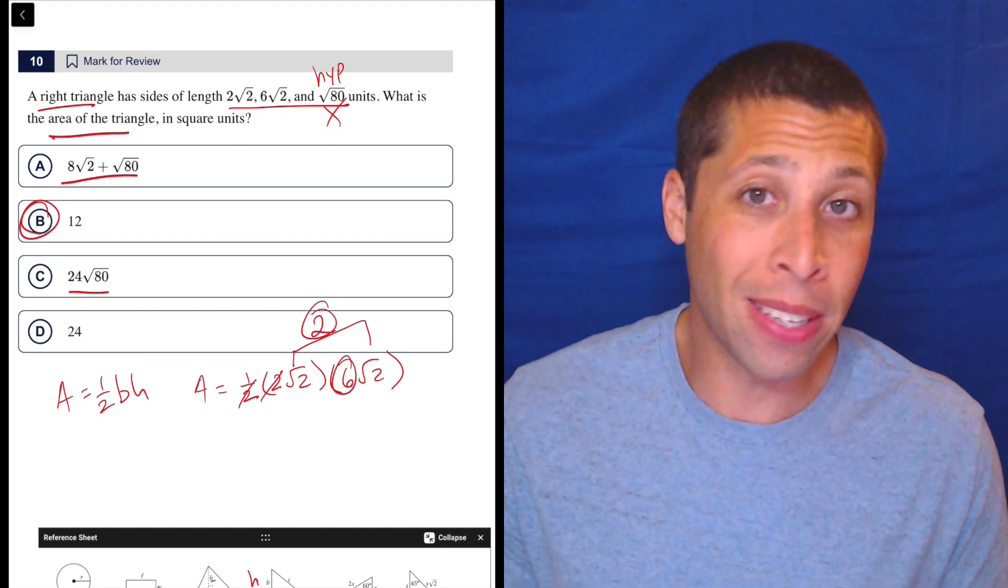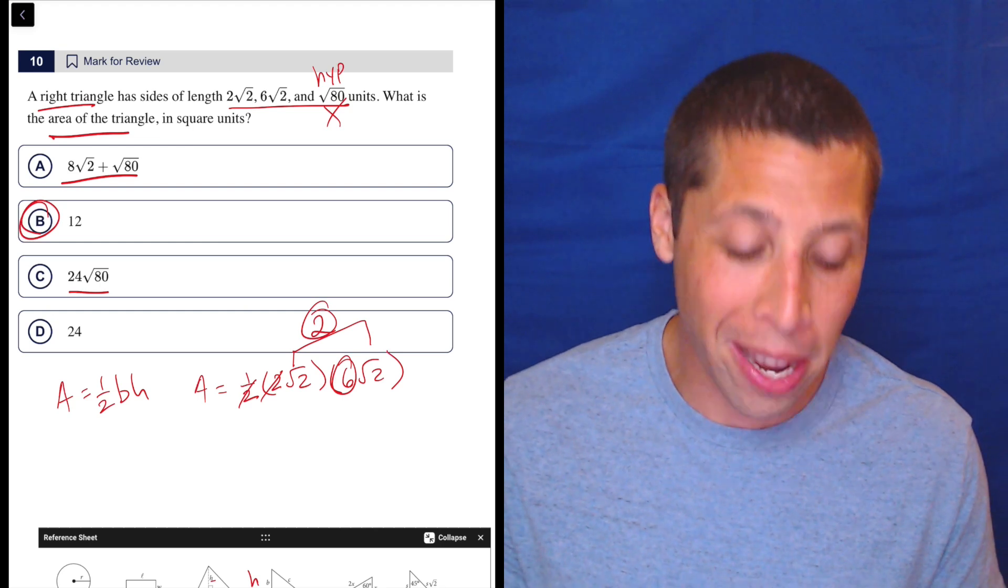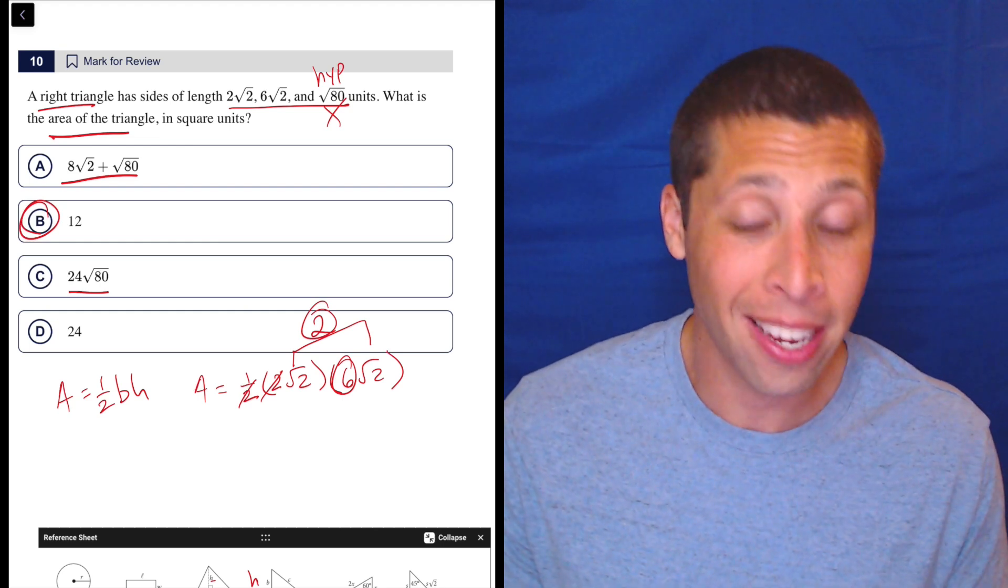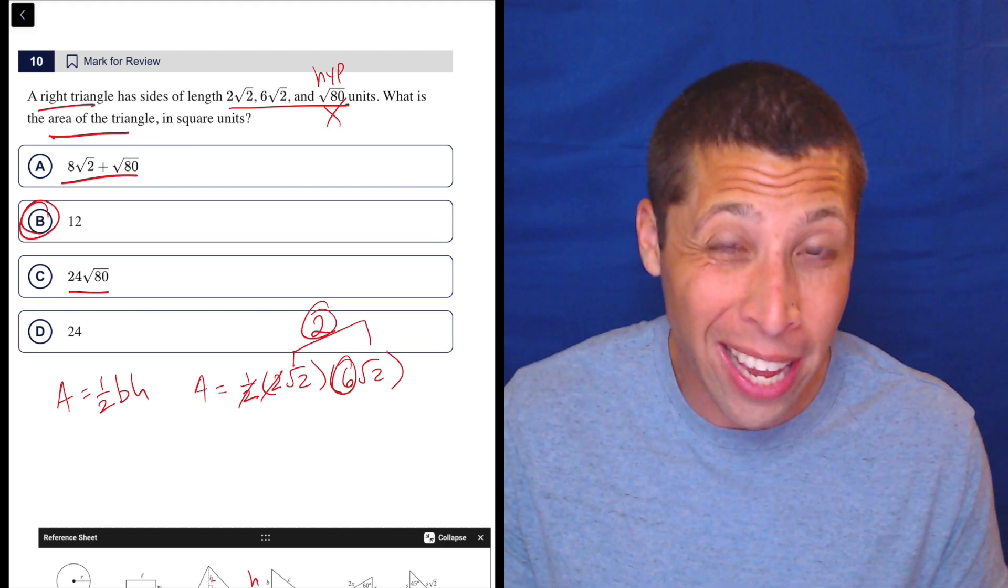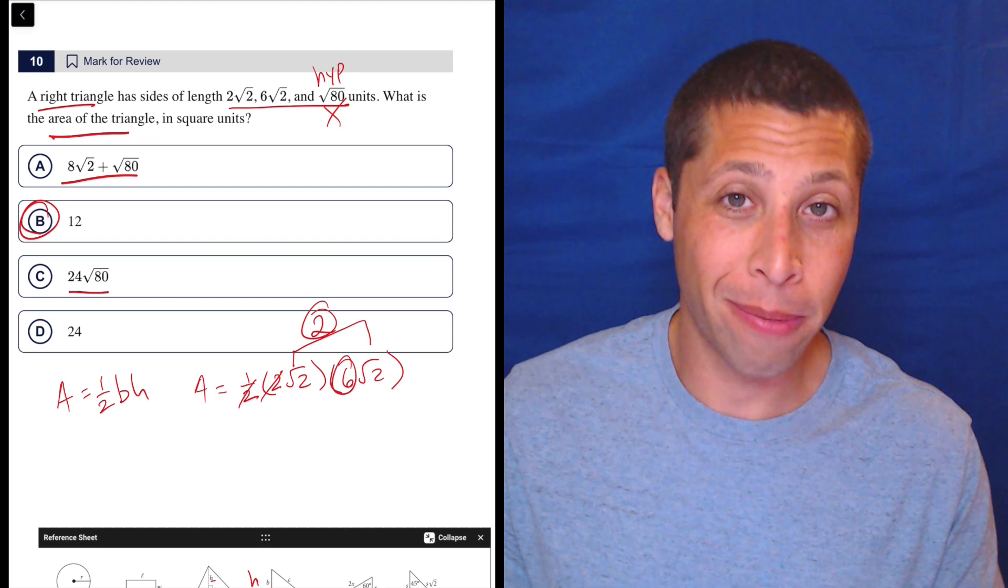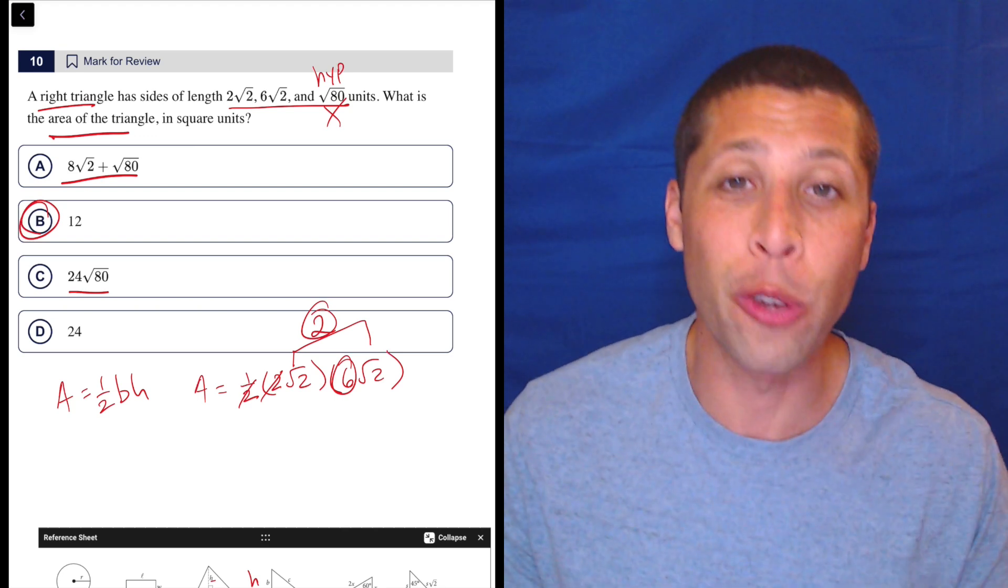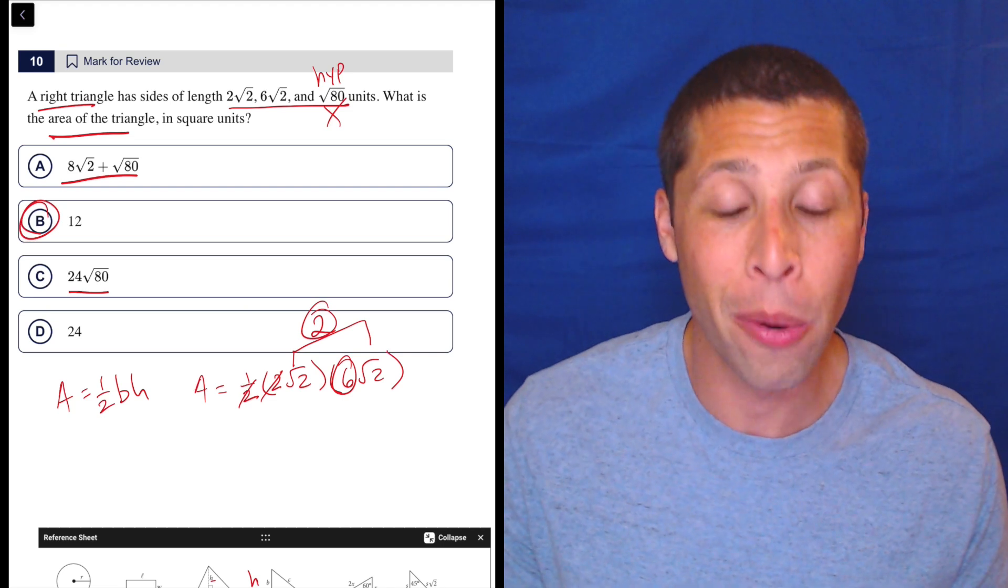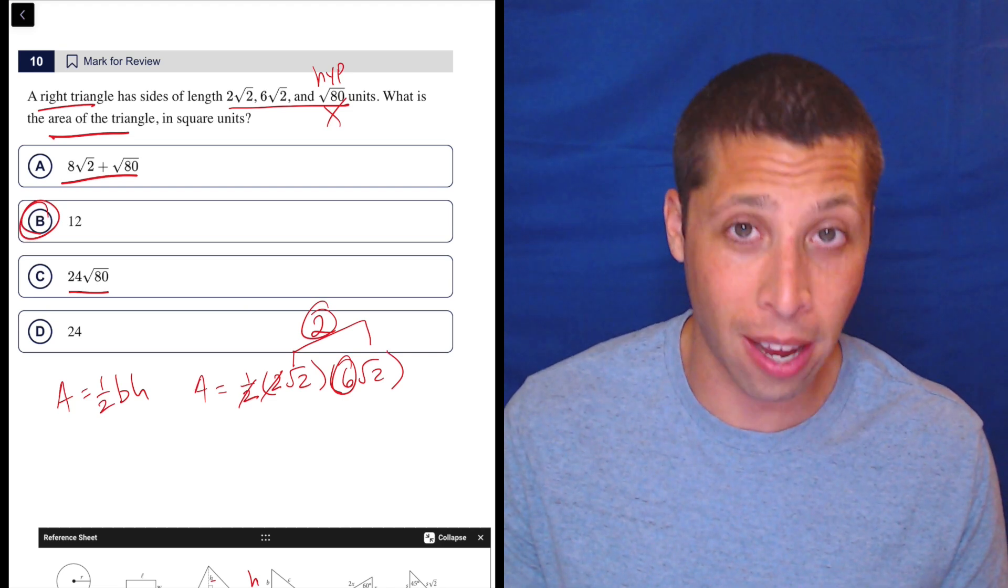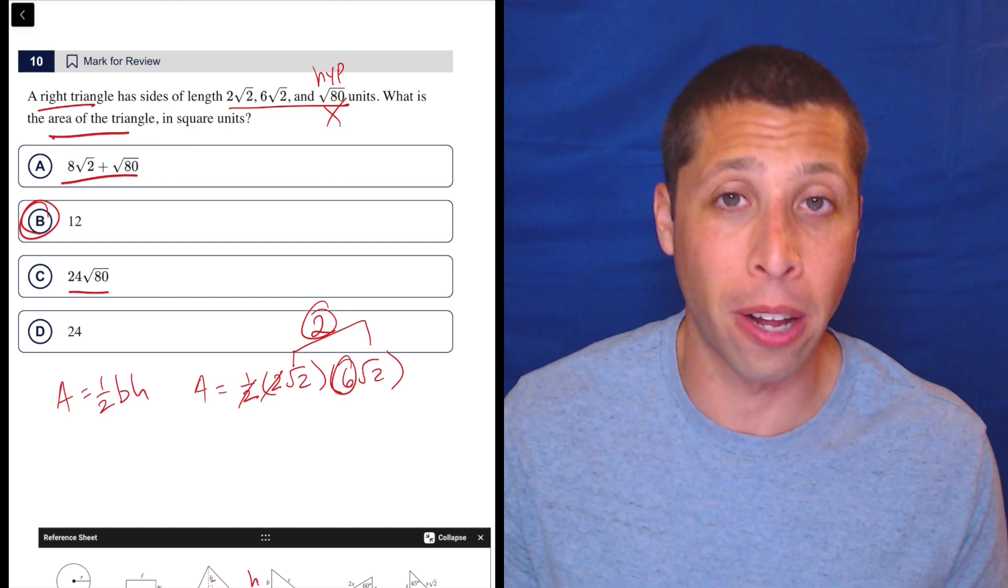But yeah, this is not so bad. I think even if you didn't really know what you were doing, many of you would have done 2√2 and 6√2 as the legs and as the base and the height and use those anyway. But I could see a harder version of the SAT kind of messing with us and making the hypotenuse not the last part of this and making you go back and kind of figure it out. So just good habit to get into is double check. But regardless, the hypotenuse is always the longest side. And in this case, because it's a right triangle, we can exclude it. It's not going to be part of finding the area.